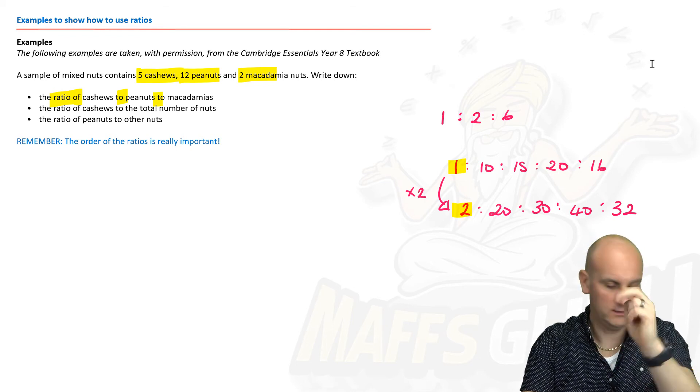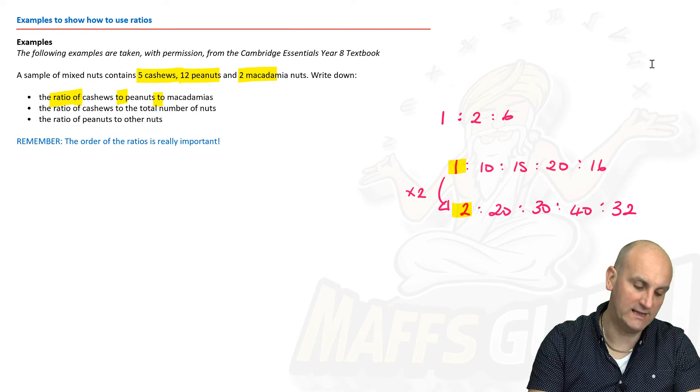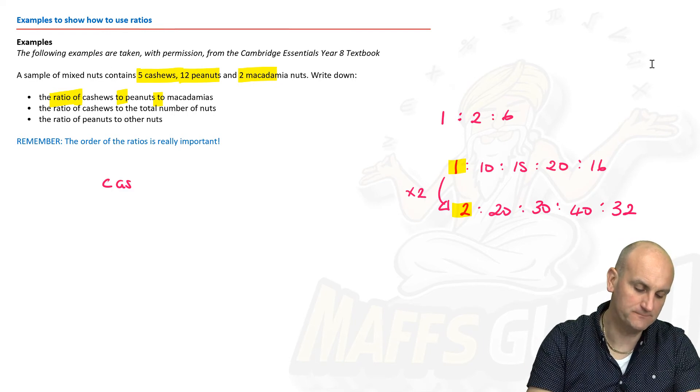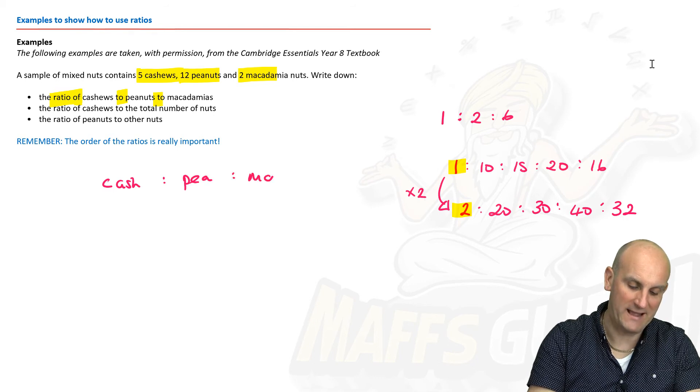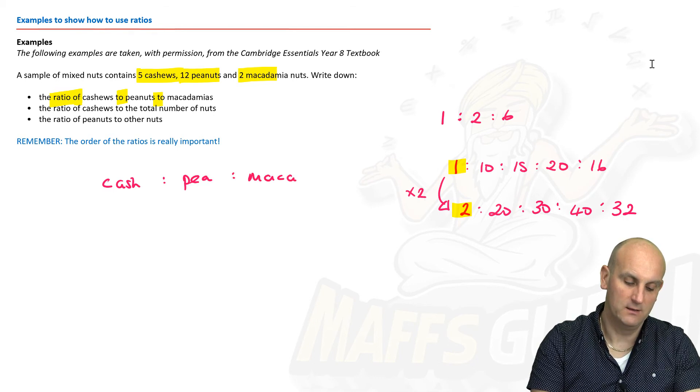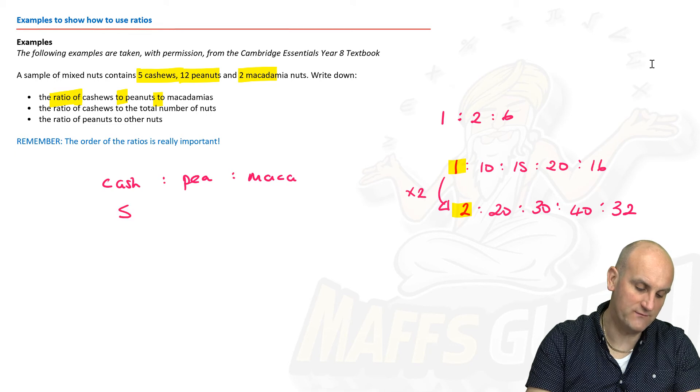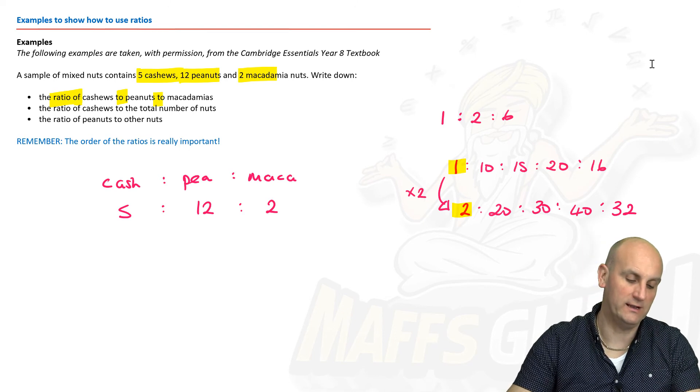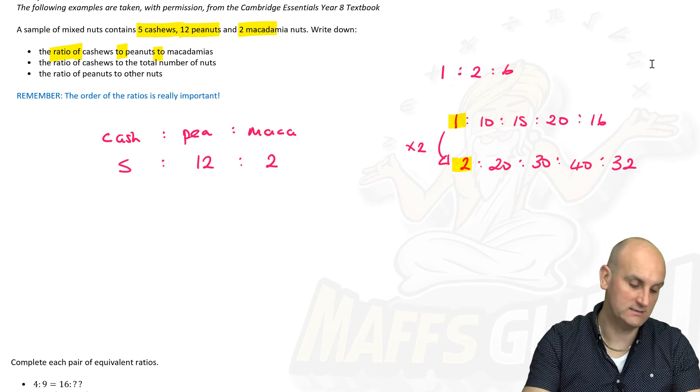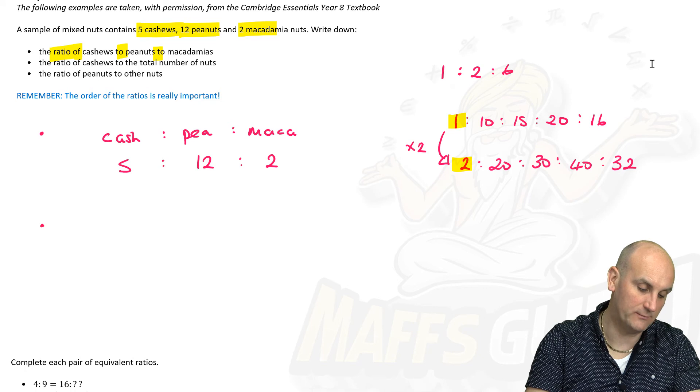The ratio has the colon, has two dots, there we go. So ratio of cashews, so I'm going to write 'cash' colon 'p' colon 'macca'. So cashews: five, peanuts: twelve, macadamias: two. And I cannot cancel these down, so believe it or not, ladies and gentlemen, that's the answer to that first dot point.